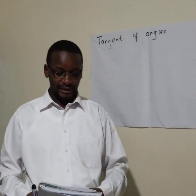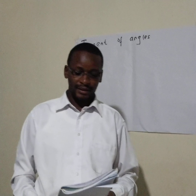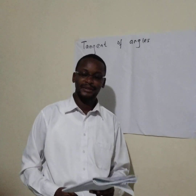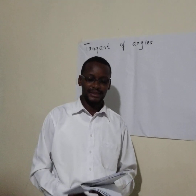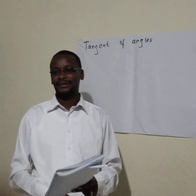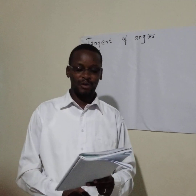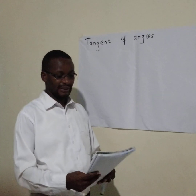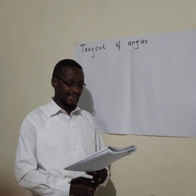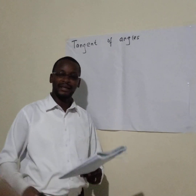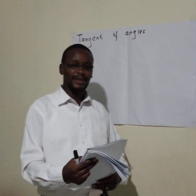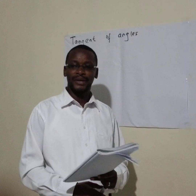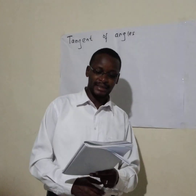Good morning and welcome to today's lesson. In today's lesson we are going to look at tangents of acute angles. As we looked at in the previous lesson, tangent is a trigonometric ratio — it is a ratio of the opposite side of a triangle divided by the adjacent side, depending on the angle you are looking at. Acute angles are angles which are less than 90 degrees.